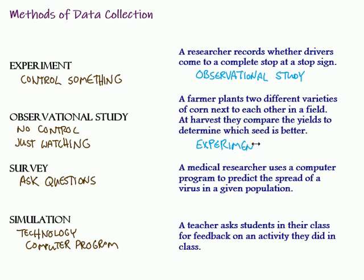Next one: a medical researcher uses a computer program to predict the spread of a virus in a given population. As soon as you see technology involved and a computer program, there's a really good chance you're looking at a simulation. This is something that is too big to really do an experiment with. Obviously it would be unethical to just set a virus loose and see what happens — we can't do that. So we use computer software to make predictions based on different parameters and things.